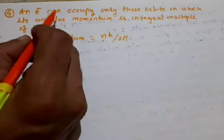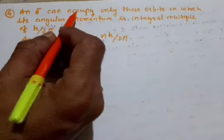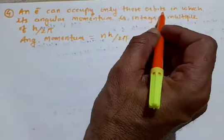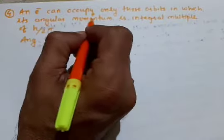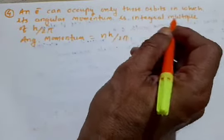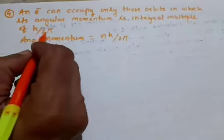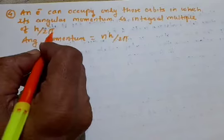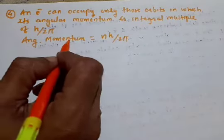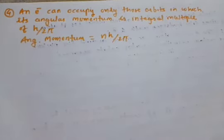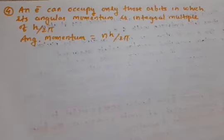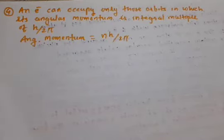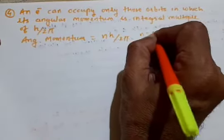An electron can occupy only those orbits in which its angular momentum is an integral multiple of h upon 2pi. So, angular momentum equals nh upon 2pi, where n equals 1, 2, 3 and so on.